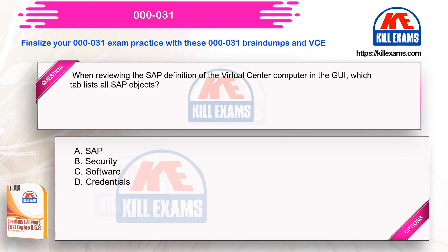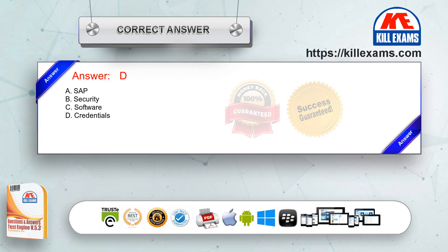When reviewing the SAP definition of the virtual center computer in the GUI, which tab lists all SAP objects? Option A: SAP. Option B: security. Option C: software. Option D: credentials. The correct answer is option D.